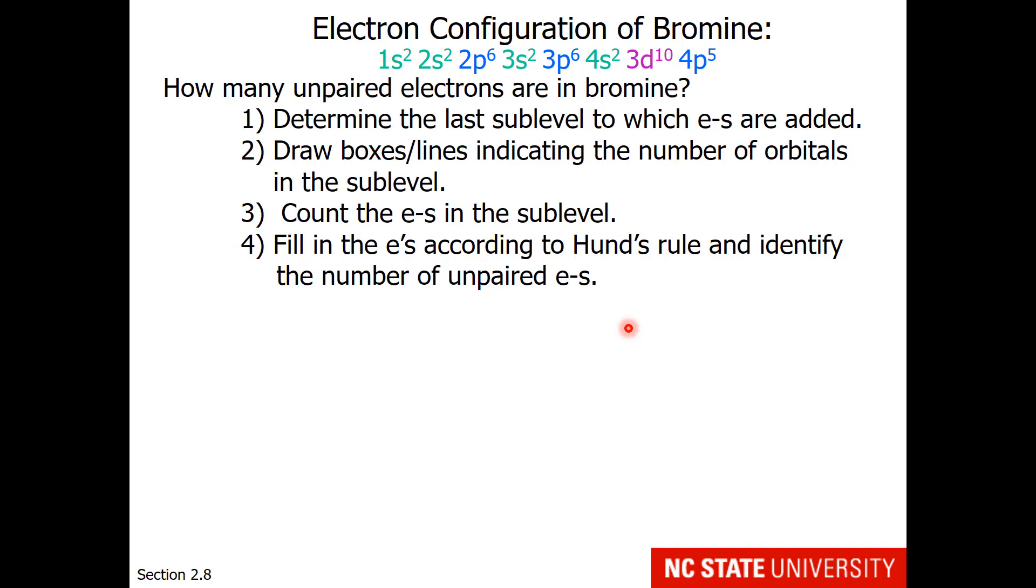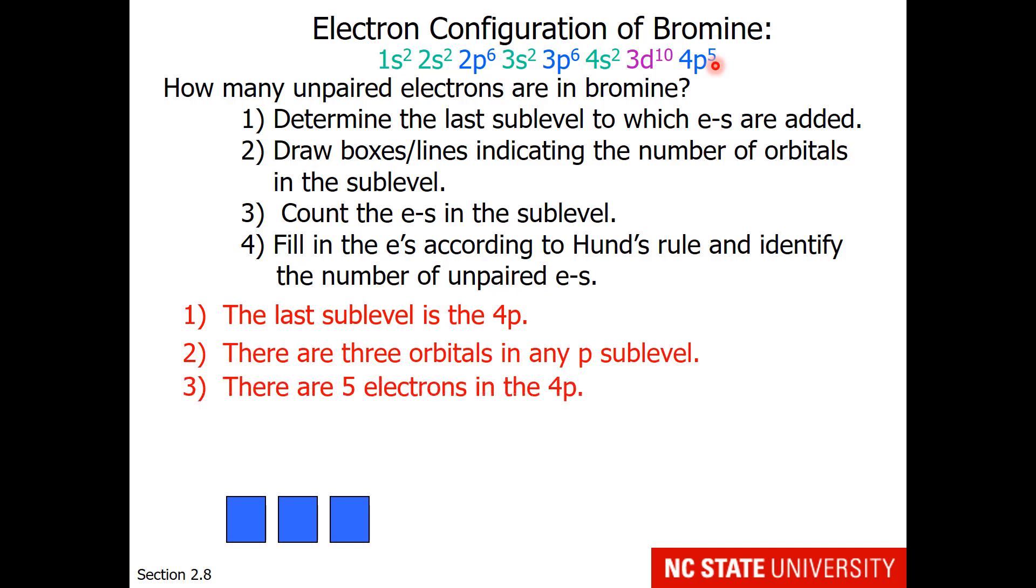This last question asks us, how many unpaired electrons are in bromine? Here are your steps. Determine the last sublevel to which the electrons are added. Okay, that would be the 4p. The next one, draw boxes or lines if you prefer, indicating the number of orbitals in the sublevel. How many bananas do you have in a p sublevel? I hope you're going to say 3. Count the electrons in the sublevel. Not a problem for this example, we're given 5. So there are 5 electrons that we need to place. Last step, fill in the electrons according to Hund's rule. That's important, because we need to spread them out and point them the same direction when you can, pair them when you must.